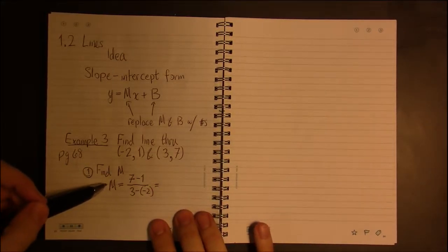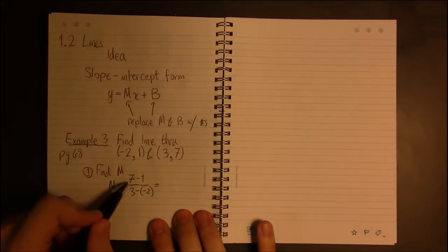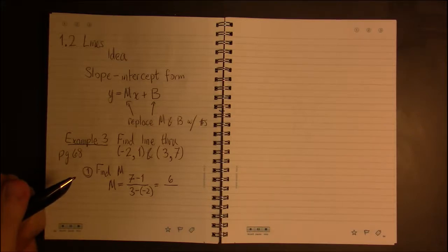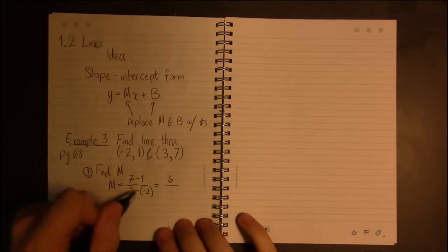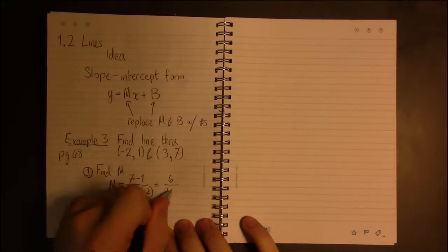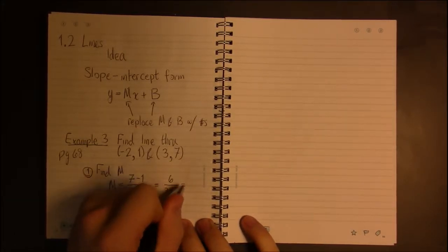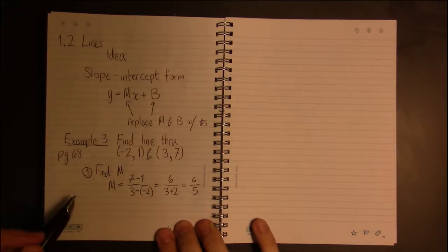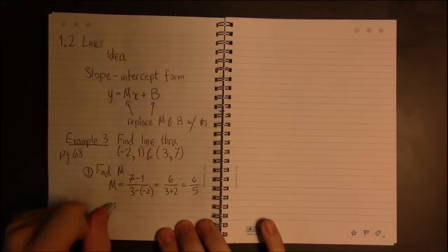This quotient, whatever that is, that's going to be the value of m. 7 minus 1 is 6. And then, 3 minus (-2) is 3 plus 2, which is 5. So, our slope is 6/5. This is our slope.